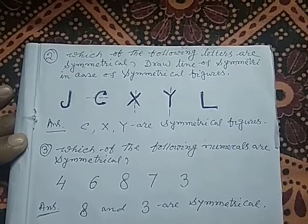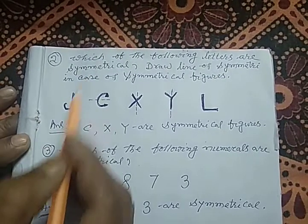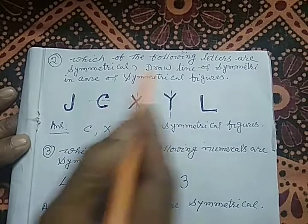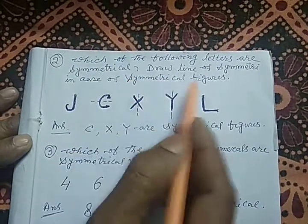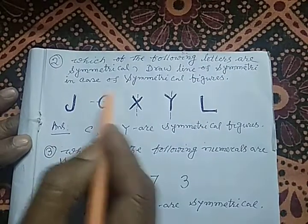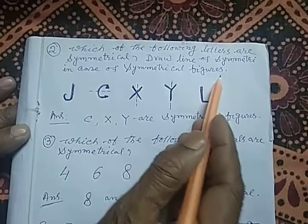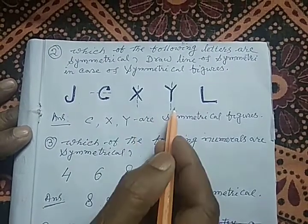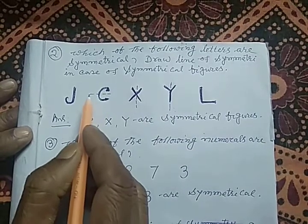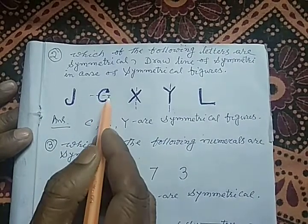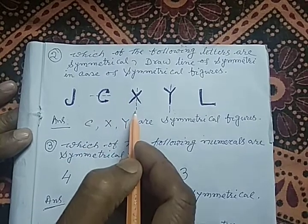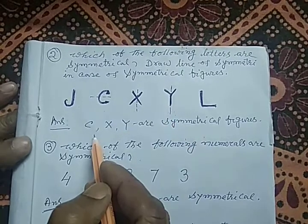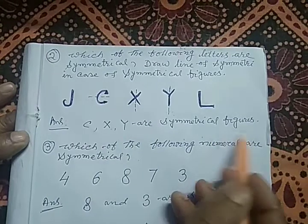In question two, there are several English alphabet letters — J, C, X, Y, L — and the question is which of the following letters are symmetrical, and to draw the line of symmetry for symmetrical figures. In this case, C, X, and Y are symmetrical figures. C has a horizontal line of symmetry, X has a vertical line of symmetry, and Y also has a vertical line of symmetry.